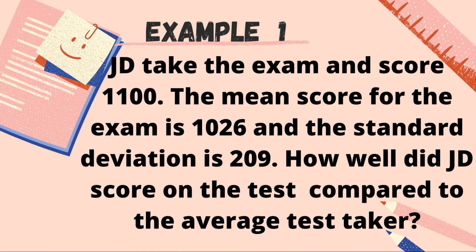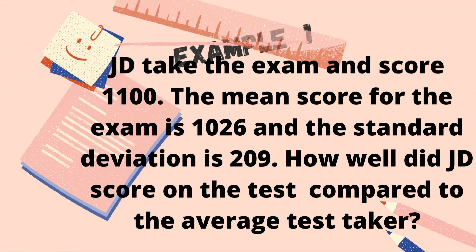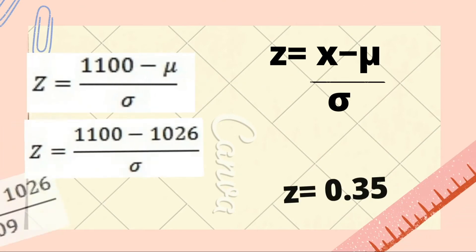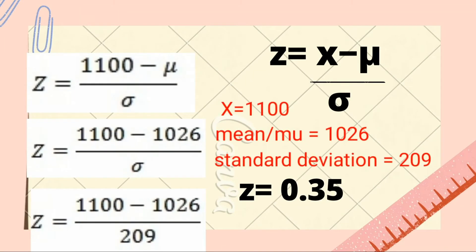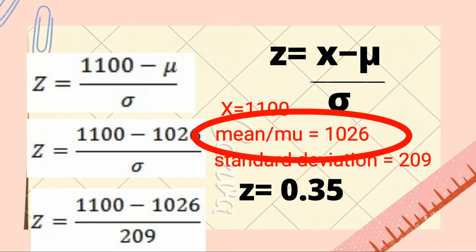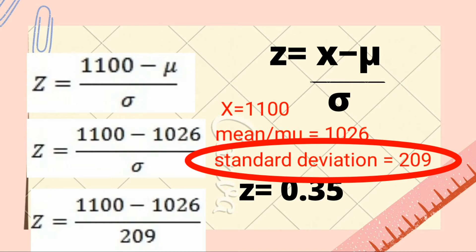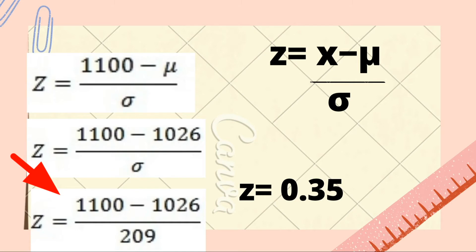I will give you an example. JD took an exam with a score of 1,100. The mean score for the exam is 1,026 and the standard deviation is 209. How well did JD score on the test compared to the average test taker? We're going to use the formula for population data, where x equals 1,100, mean equals 1,026, and standard deviation equals 209. Substituting: 1,100 minus 1,026, divided by 209. The answer is 0.35.